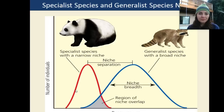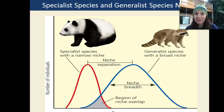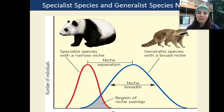Another example of a specialized species is the panda. The panda has an extremely narrow niche — it feeds on bamboo, and whenever we destroy their habitat or take away the bamboo, panda populations decline because they starve and eventually die. A raccoon, on the other hand, has a very broad niche, so it's a generalist — it can live in many different areas and get its food from many different places.